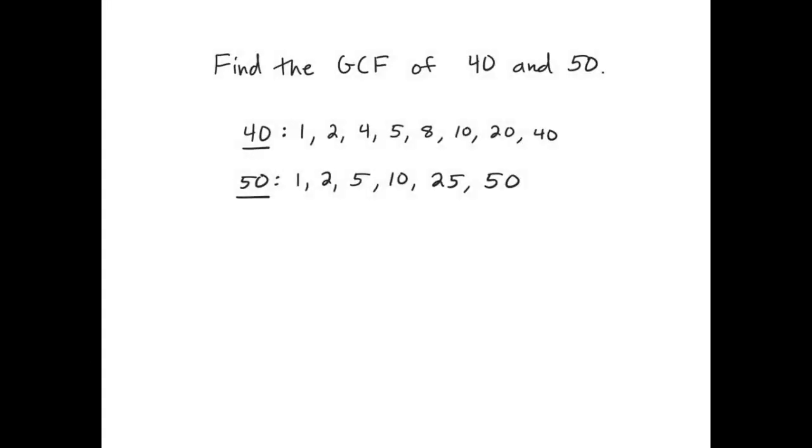Here's another example. Find the greatest common factor of 40 and 50. Now, again, I can look at these factors as all being common, but the greatest one is 10. So we would say the greatest common factor, that means the largest factor they have in common, is 10. Now sometimes you can just look at the two numbers and just ask the question, what is the largest number that will go into 40 and 50? And you might be able to come up with 10 by just thinking through your multiplication facts, and that's fine.